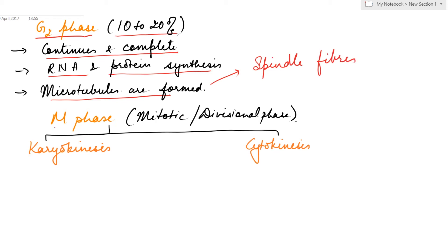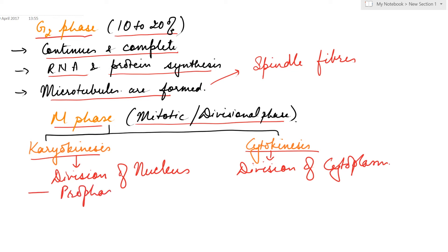Next is the M phase, which is the mitotic or divisional phase. It can be divided into two stages: karyokinesis, which is division of nucleus, and cytokinesis, which is division of cytoplasm. The M phase is divided into four substages: prophase, metaphase, anaphase, and telophase.